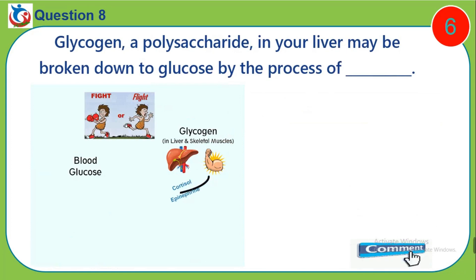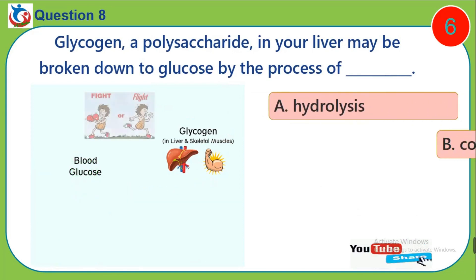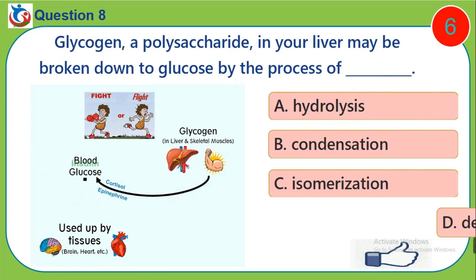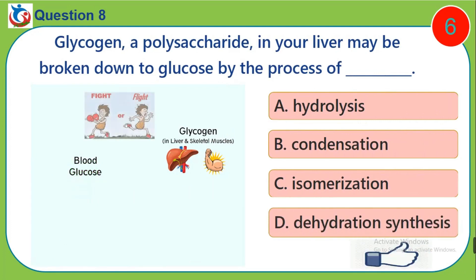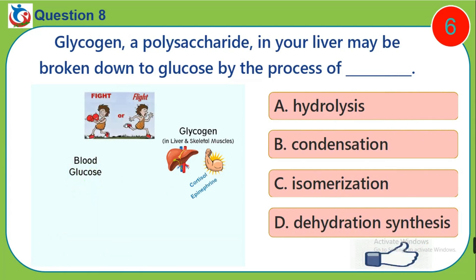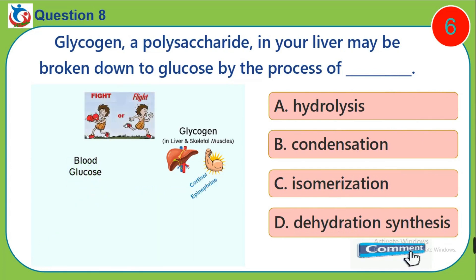Question 8. Glycogen, a polysaccharide in your liver, may be broken down to glucose by the process of dash. A. Hydrolysis, B. Condensation, C. Isomerization, D. Dehydration synthesis.